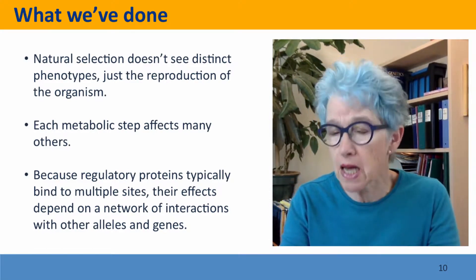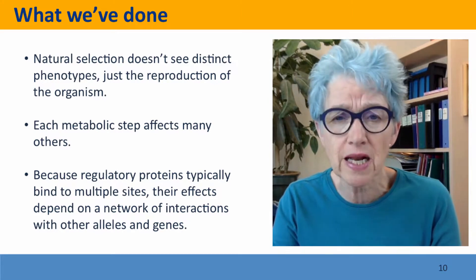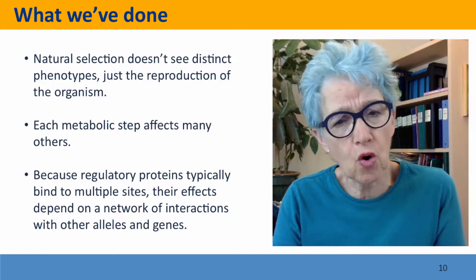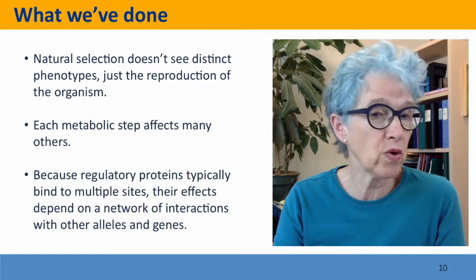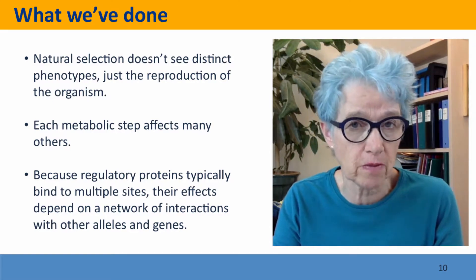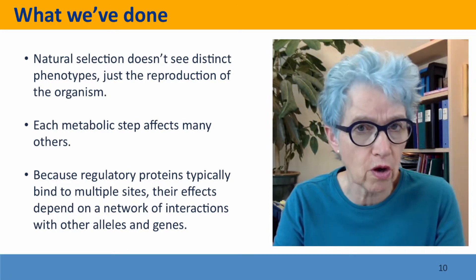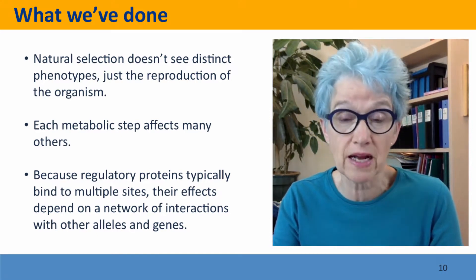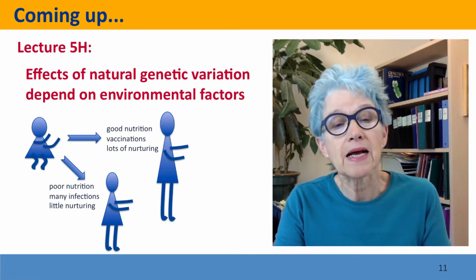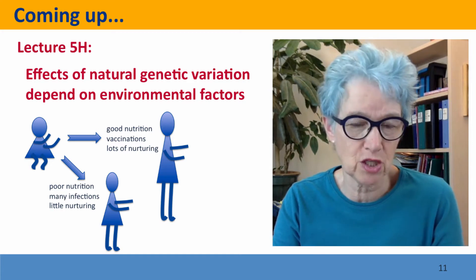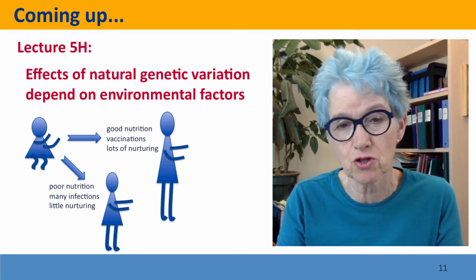We've thought about how natural selection doesn't see distinct phenotypes — boundaries between phenotypes are something that geneticists invented. Natural selection works on the reproduction of the organism as an integrated whole. We looked at metabolic steps and how interconnected the effects of different steps are, even though we can draw each step as a distinct event. And we looked at regulatory proteins, where it's much more complicated because they're interactive by their very nature, interacting with more than one gene at different levels with different strengths. Coming up next, we'll look at yet another reason why the relationship is complicated: the effects of natural genetic variation also depend on environmental factors.